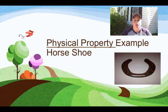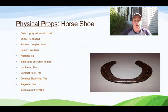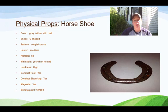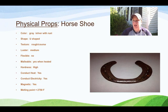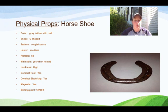Here's a quick example using a horseshoe for physical properties. What's its color? It's gray and silver with a little bit of rust. Its shape is U-shaped. Its texture is rough and coarse. Its luster is about medium. Is it flexible? No. Is it malleable? Yes, when it's heated. Its hardness is pretty high — you definitely can't scratch it with your fingernail. Does it conduct heat? Absolutely. Does it conduct electricity? Sure, it's a metal. Is it magnetic? Yup. And its melting point is 2,750 degrees Fahrenheit.